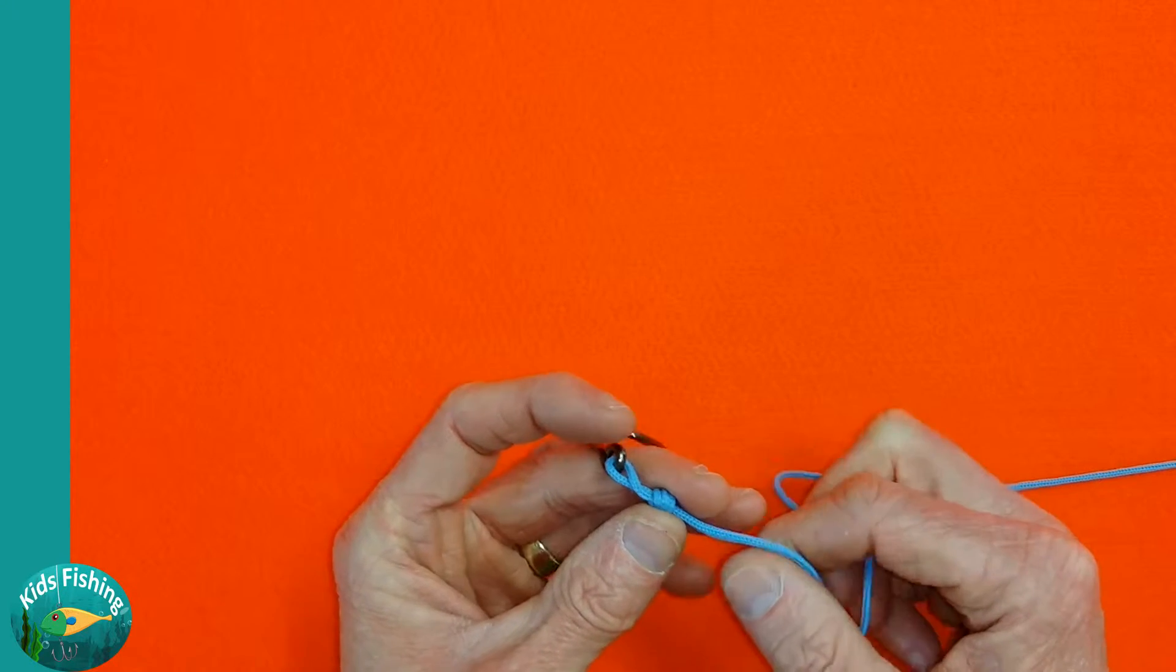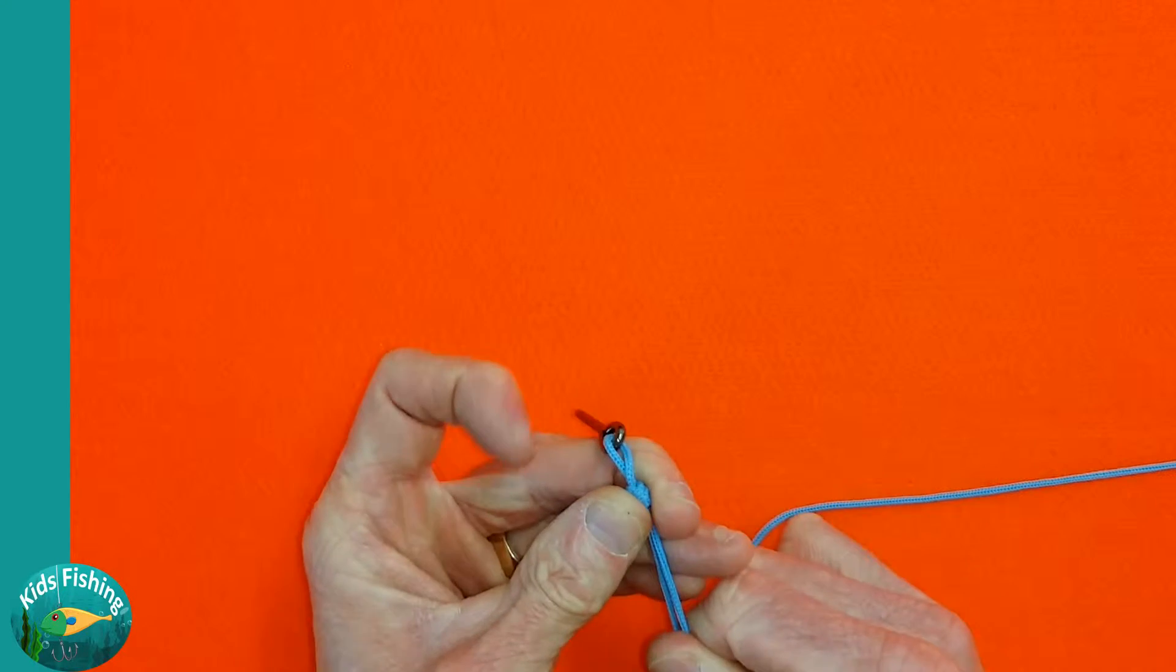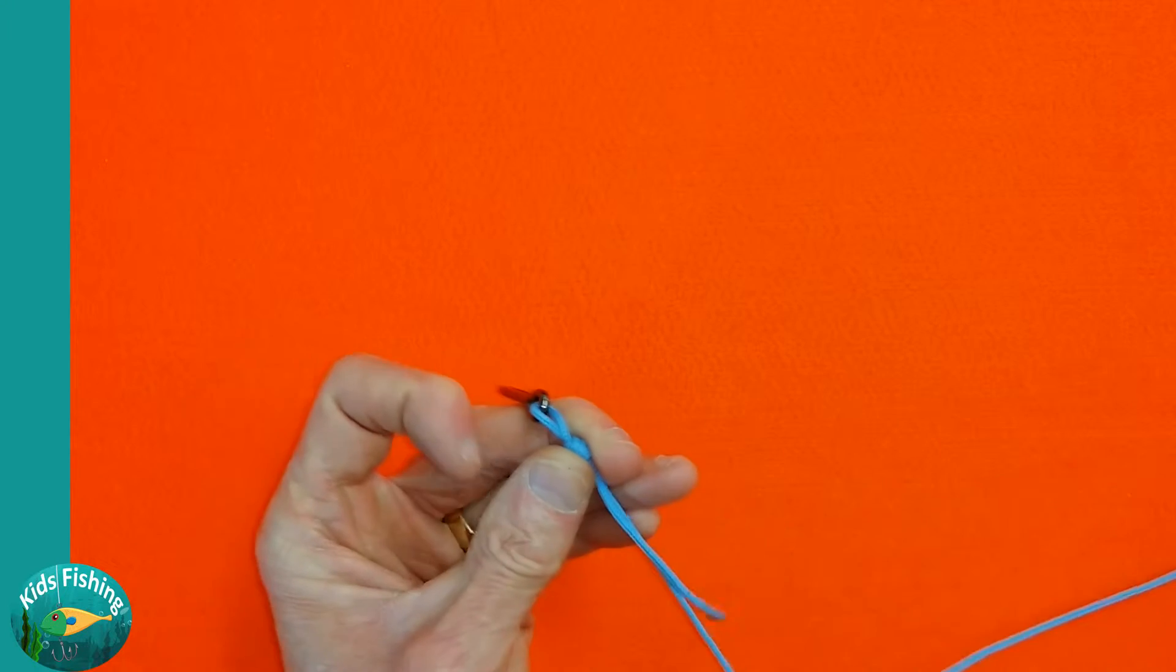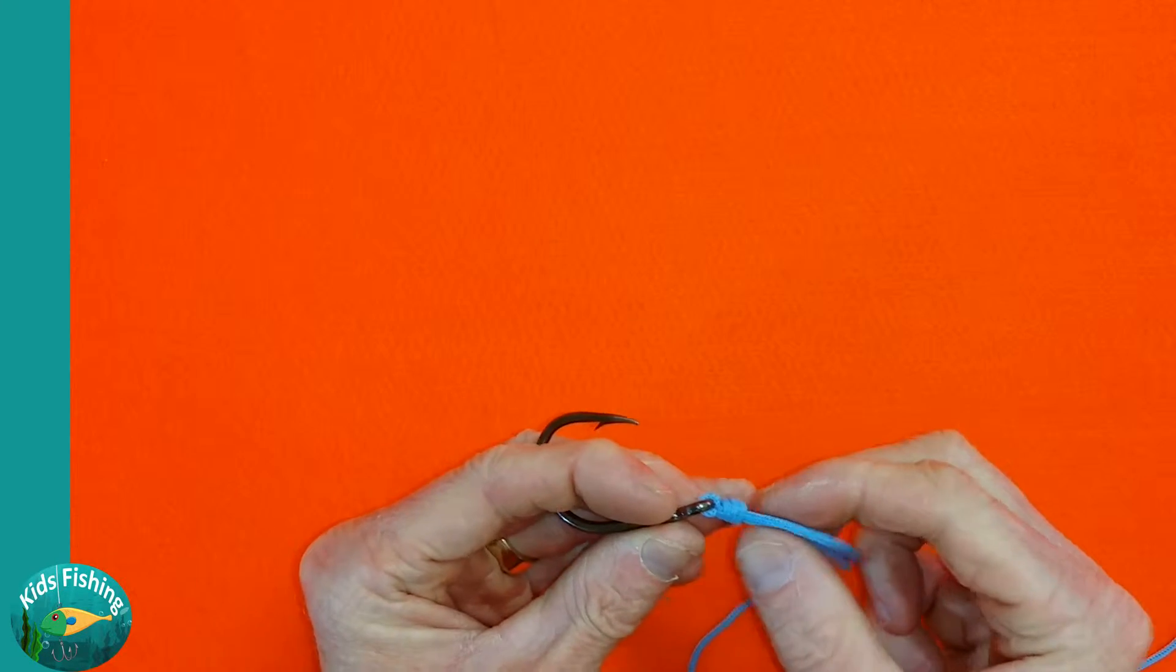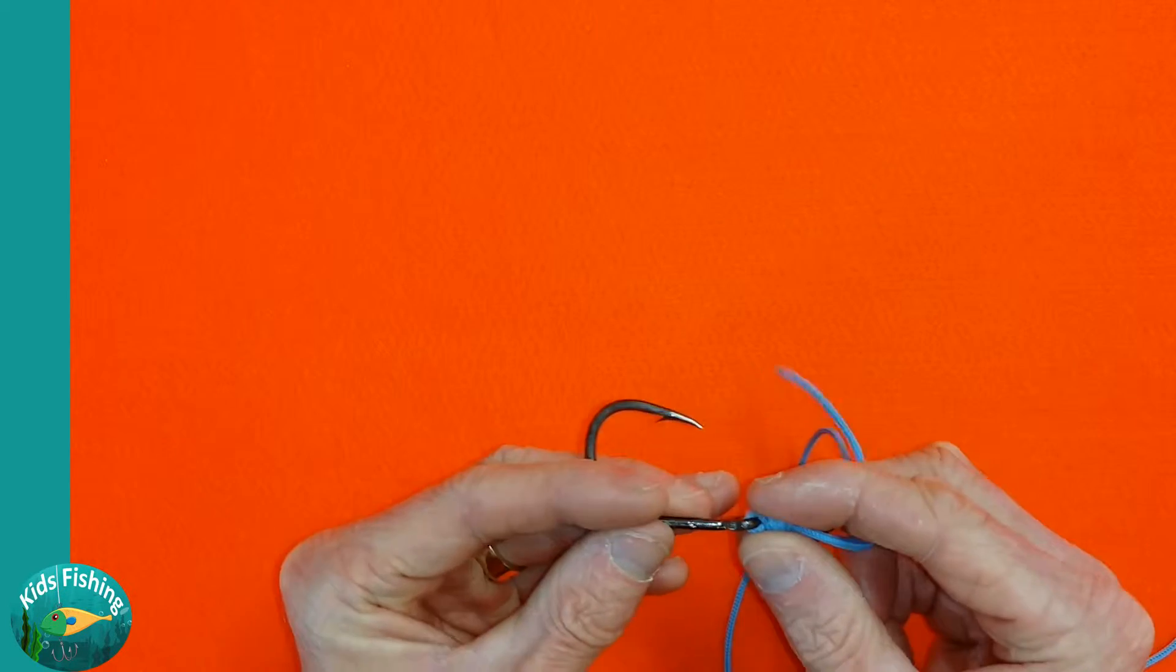In fact, it actually slides on the line. If you see how it's actually cinching up, it actually slides up and down on this line, which means that it doesn't reduce the strength.